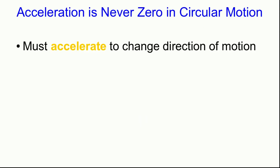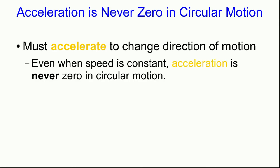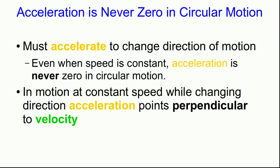As you've seen earlier in the course, an object must accelerate to change its direction of motion. Well, an object that's moving in a circle is always changing direction. And so even if the speed is constant, even in uniform circular motion, the acceleration is never zero in circular motion. And note that we've already seen that in motion at constant speed while changing direction, the acceleration points perpendicular to the velocity into the turn.